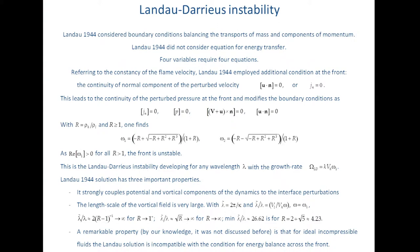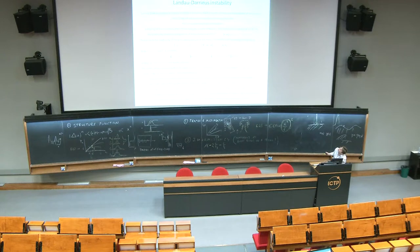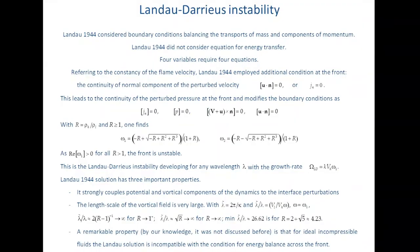Landau used a somewhat different approach. He considered the boundary conditions that balance mass and two components of momentum at the interface, and he did not consider the question of energy transfer. However, four variables still require four equations. Referring to the constancy of the flame velocity, Landau employed an additional condition at the front called the continuity of the normal component of perturbed velocity. Even though it is written in a very simple mathematical form, it has a long physics description. As soon as we employ this condition, it immediately leads to continuity of perturbed pressure at the front, and modifies the boundary conditions accordingly.